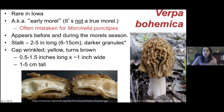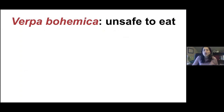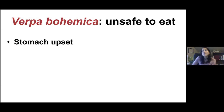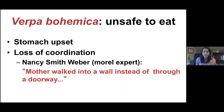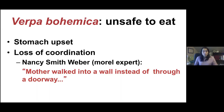Do not take any Verpa bohemica with you — they are unsafe to eat. They will cause stomach upset and can cause neurological problems; you may lose coordination. There is a famous morel expert, Nancy Smith Weber, who vividly remembers when her family mistakenly ate some Verpa — her mother would walk into the wall instead of through the doorway, because the type of poison in Verpa messes with your neurological system.